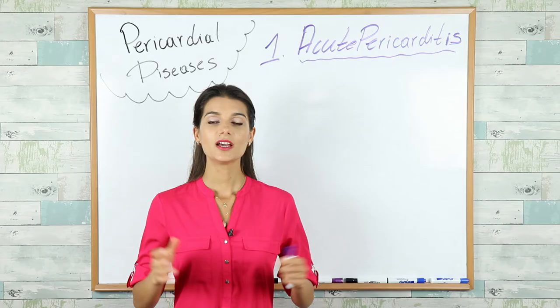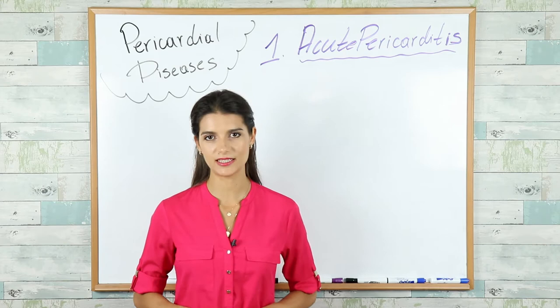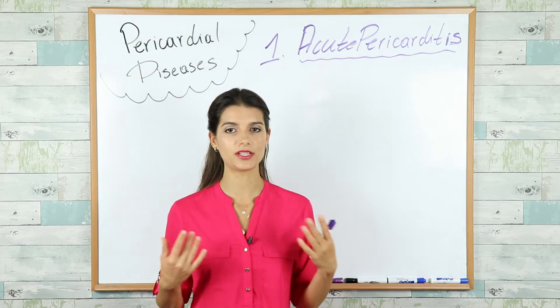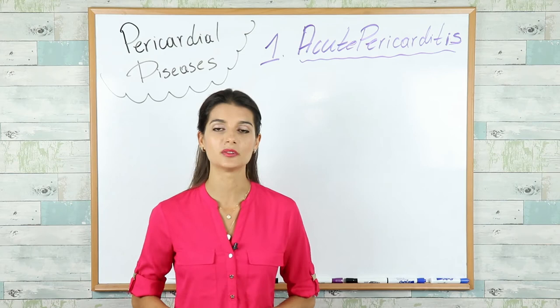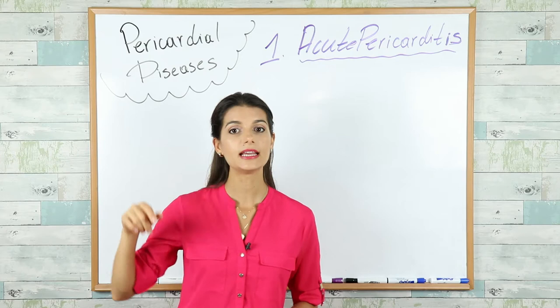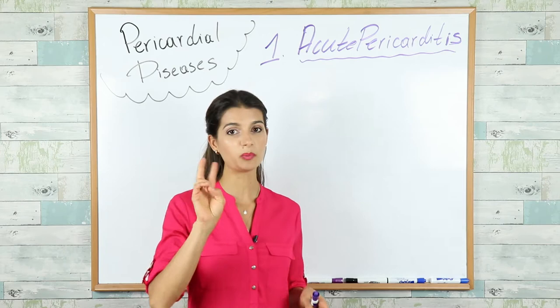What is pericarditis? The suffix '-itis' means inflammation — inflammation of the pericardium. 'Peri' means around and 'cardium' means the heart, so the pericardium is a membrane around the heart. This membrane has two layers: the outer fibrous layer and the inner serous membrane. The serous membrane has two portions — the visceral layer, which sits right on top of the heart, and the parietal layer, which is the outer layer of the serous membrane.